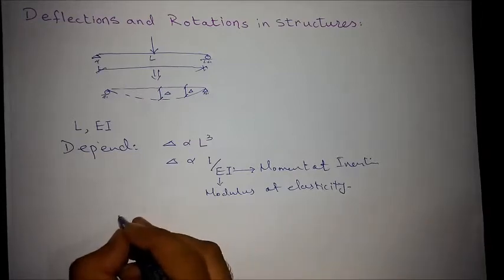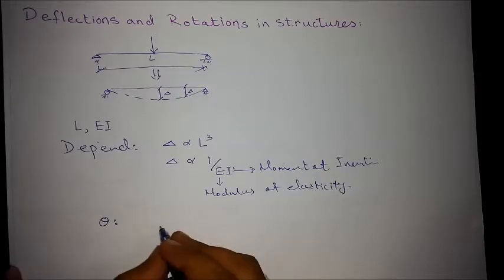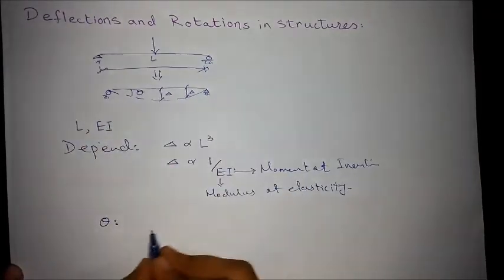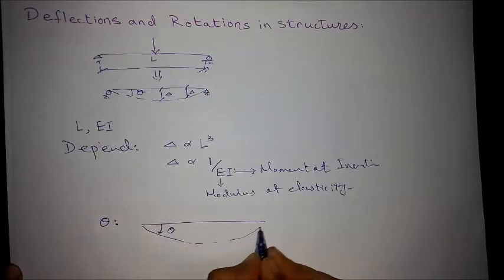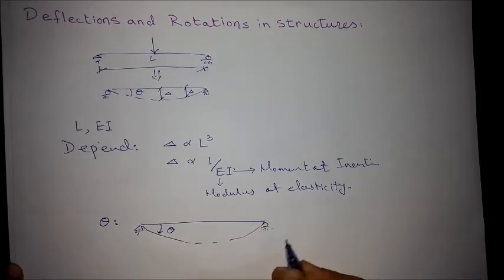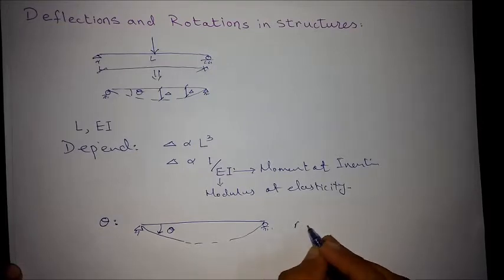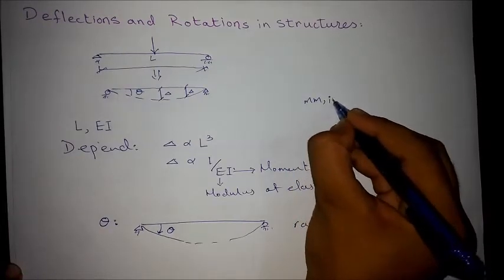Rotation is the angle between undeformed state and the deformed state. Rotation is expressed in radians while deflection may be expressed in millimeters and inches.